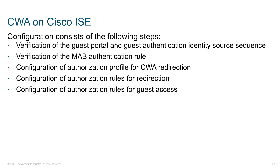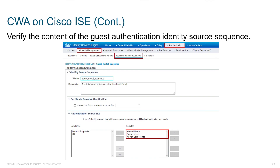The configuration consists of a few steps: verify that the guest portal is working, verify guest authentication information, configure the identity source sequence — which defines where those guest accounts will be looked up — and verify the MAB rule. We can also configure authorization profiles for the CWA redirect, and authorization rules for redirection and guest access. Under identity management, under identity source sequences, we give it a name such as 'guest portal sequence' and move the available AAA servers into the ordered list.